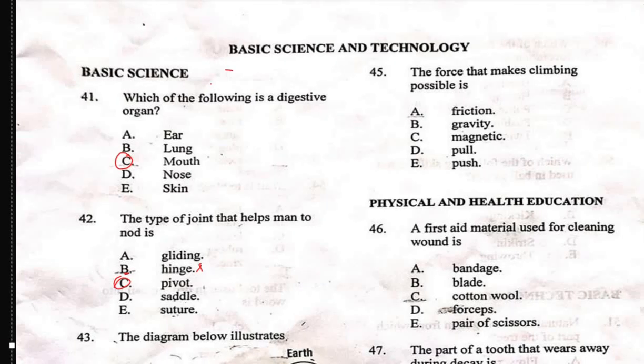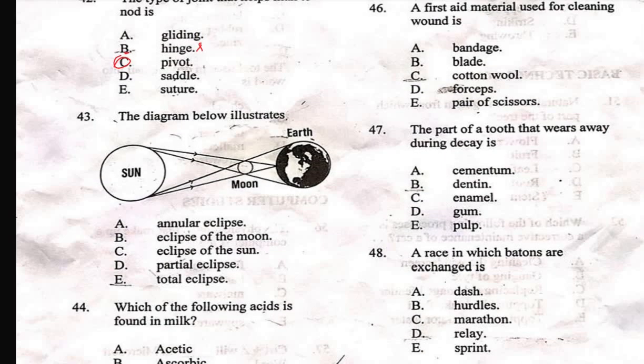Question 43 says: the diagram below illustrates what? The diagram shows the sun, the moon, and the earth — with the earth in a little bit of darkness. The options are: A) annular eclipse, B) eclipse of the moon, C) eclipse of the sun, D) partial eclipse, E) total eclipse. Since the earth is in darkness, the correct answer is total eclipse.